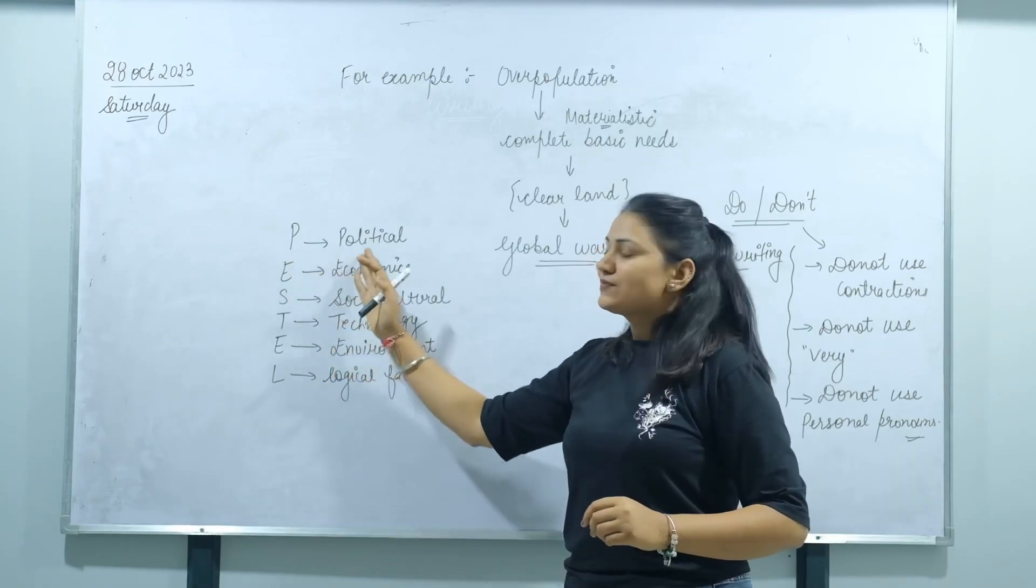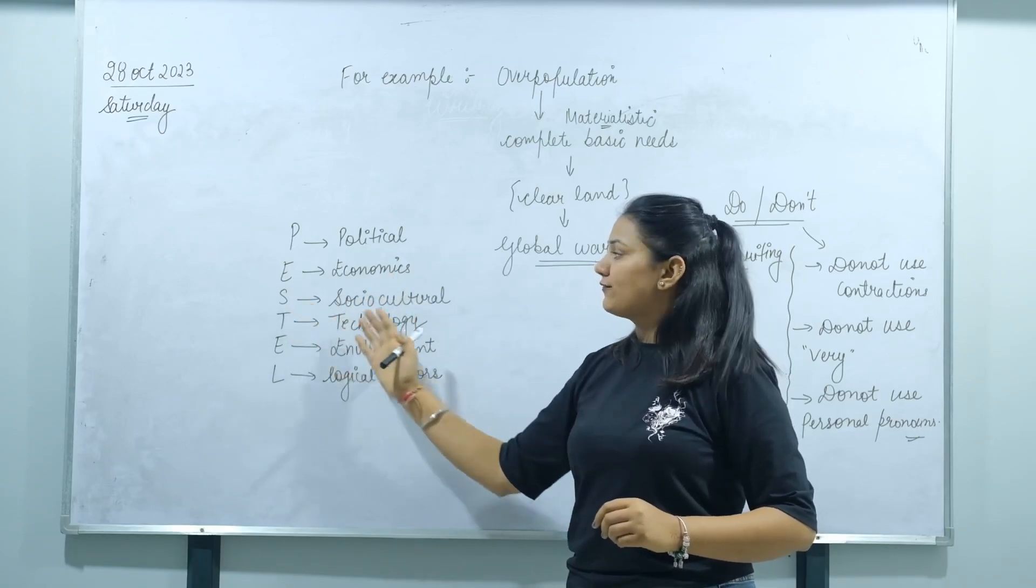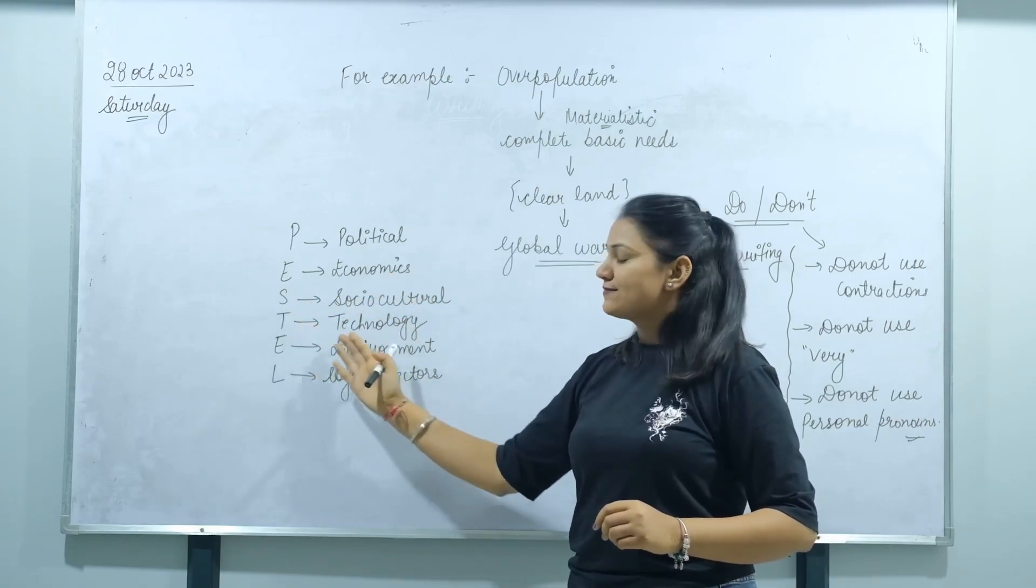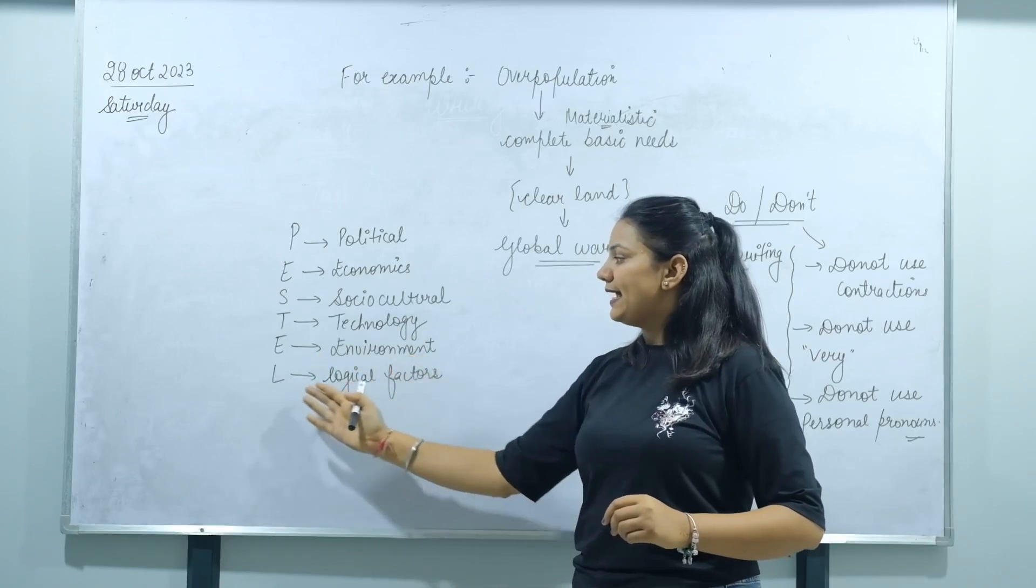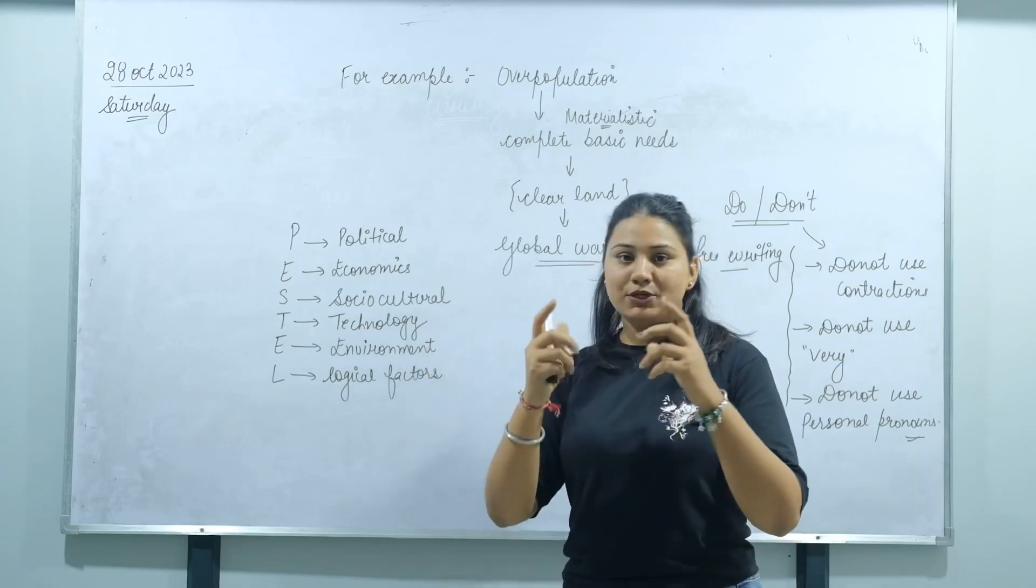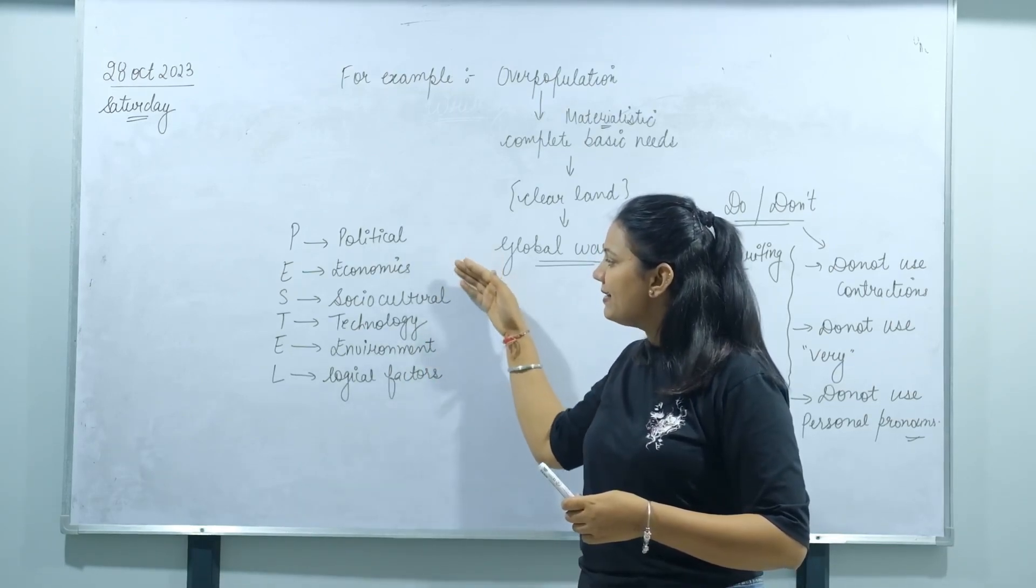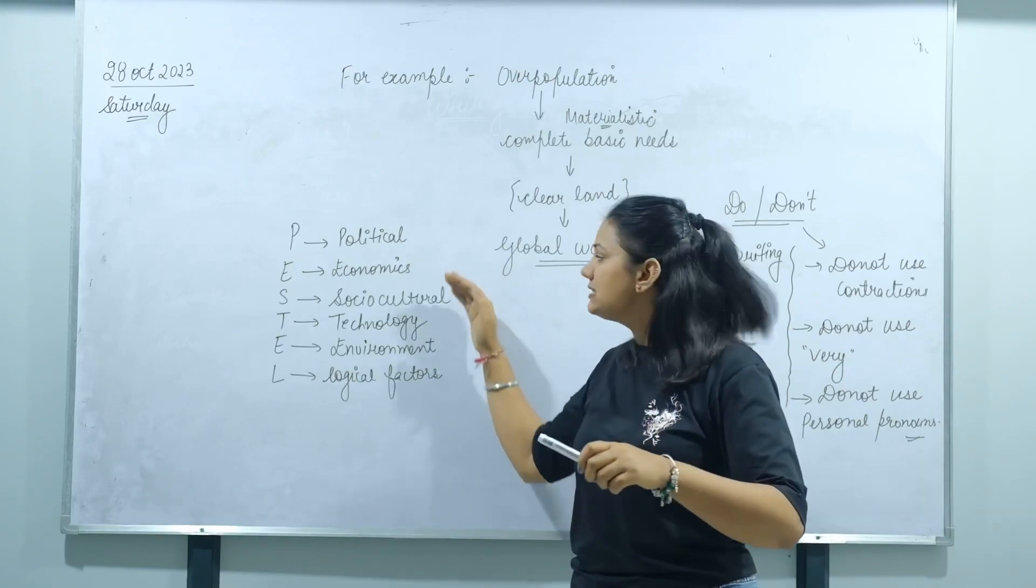The best method to develop ideas is the PESTLE method. P stands for political, E stands for economics, S stands for social culture, T stands for technology, E stands for environment, and L for legal factors. These statements are given, for example, global warming. Let's implement it.